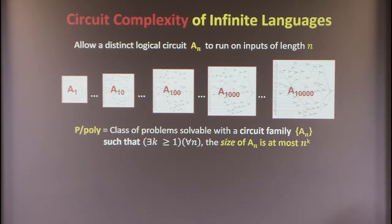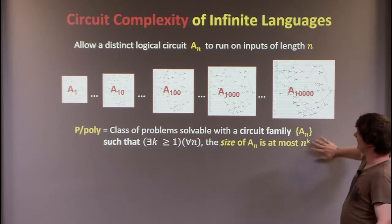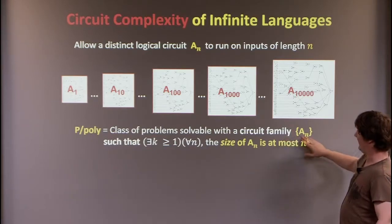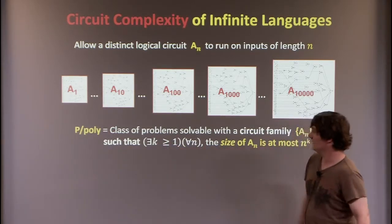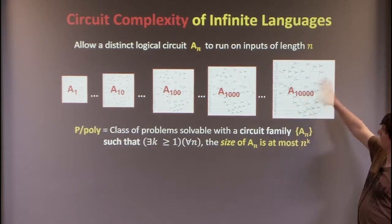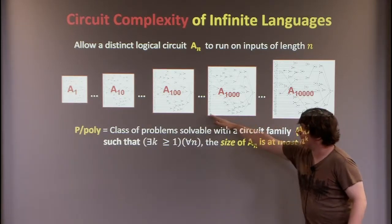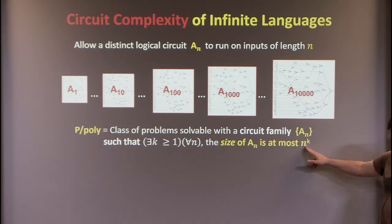The notion of feasible computation in this non-uniform model — non-uniform in contrast to the uniform model where you have a single algorithm that works on all inputs — corresponds to the class P/poly. This is the class of problems solvable with an infinite family of circuits C_n such that there exists a fixed polynomial, or constant k, so that for all n, the size of the nth circuit in terms of number of gates is at most n^k.